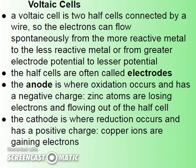A voltaic cell is two half cells connected by a wire so electrons can flow from the more reactive to the less reactive metal spontaneously — you don't have to put any energy in. The half cells are often called electrodes. The anode is always where oxidation occurs, and in a voltaic cell it has a negative charge because zinc atoms lose their electrons, which flow out into the wire. The electrons gather on the electrode and then move over to the cathode, where reduction occurs. The cathode has a positive charge as copper ions move toward it to gain the incoming electrons.